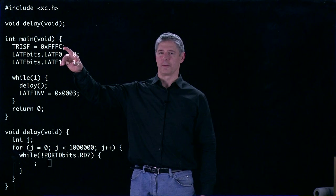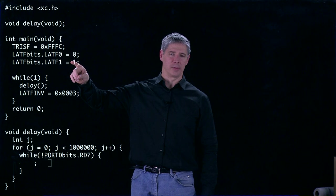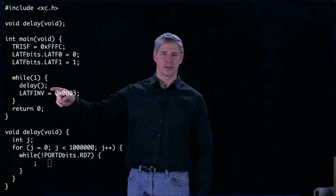Okay, so here in the main function, the first thing we do is we set the value of some variable called TRISF. Then we go down and set the value of another variable called LATFbits.LATF0. Do the same for a variable called LATFbits.LATF1. And then we enter this while loop here.